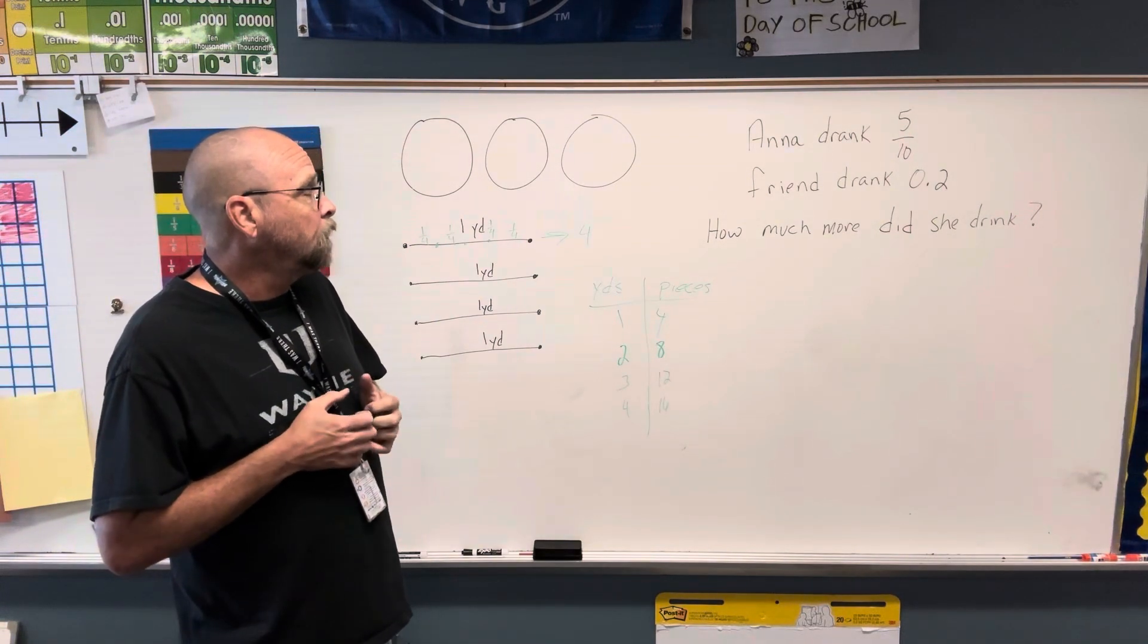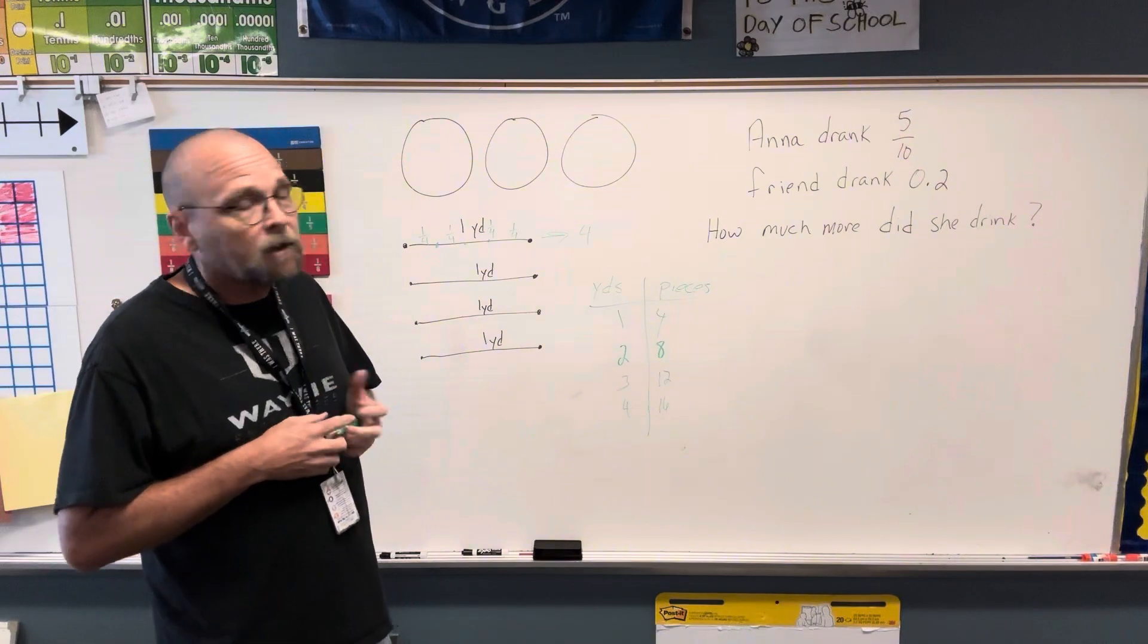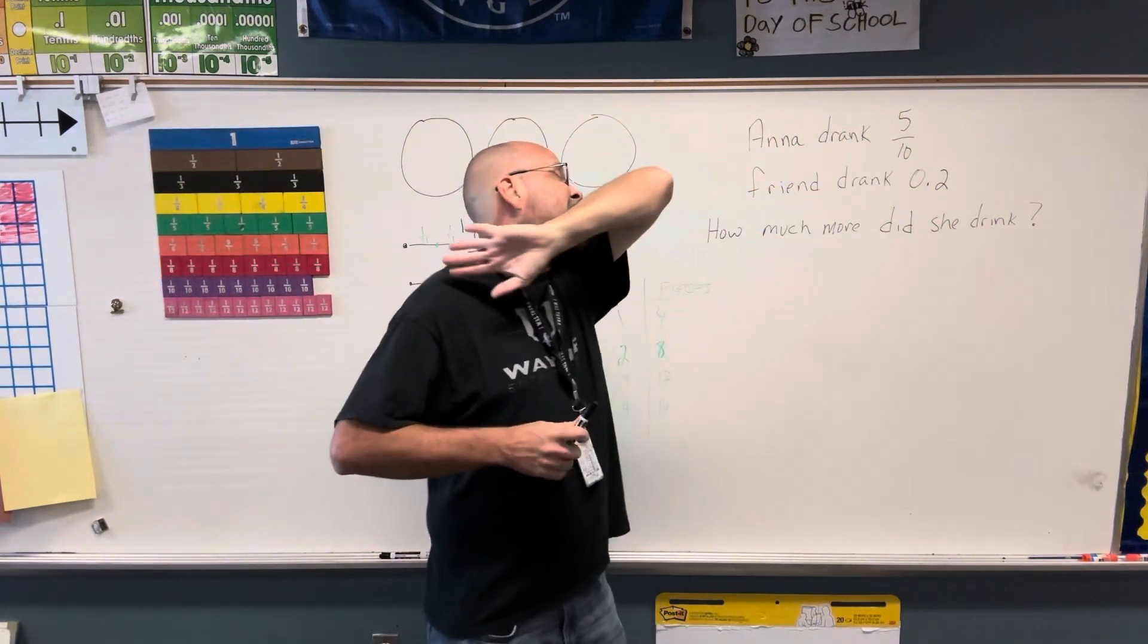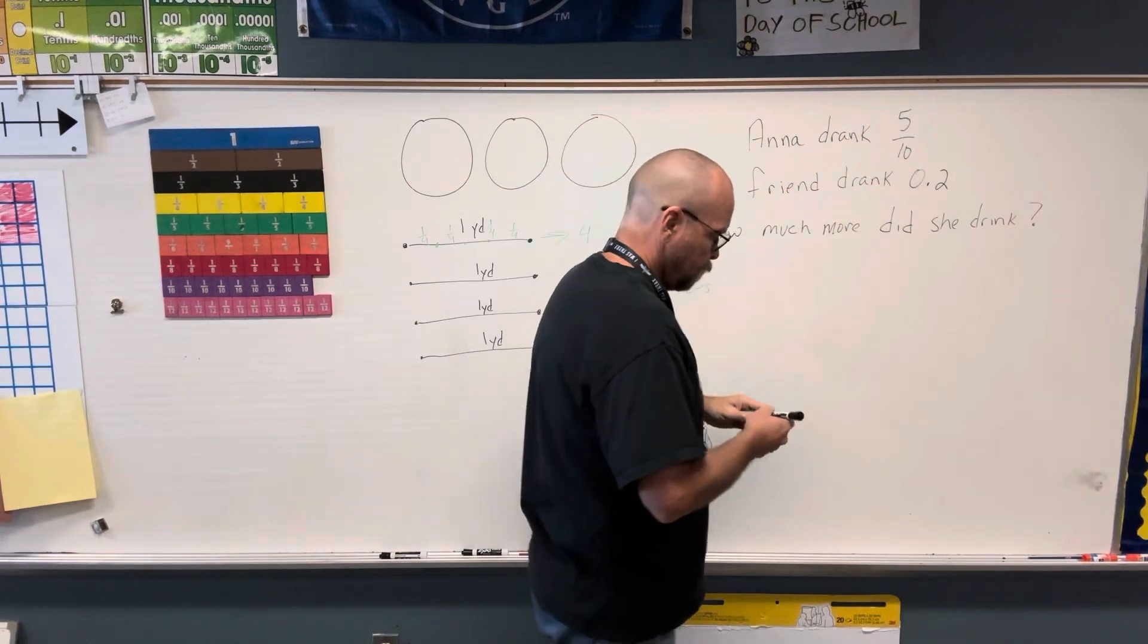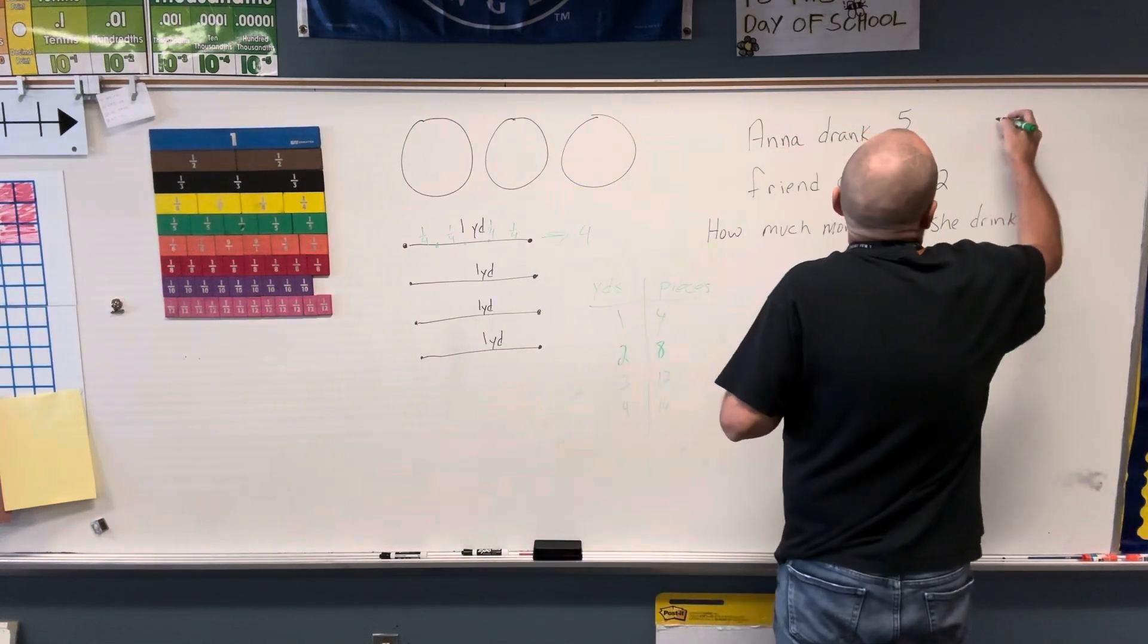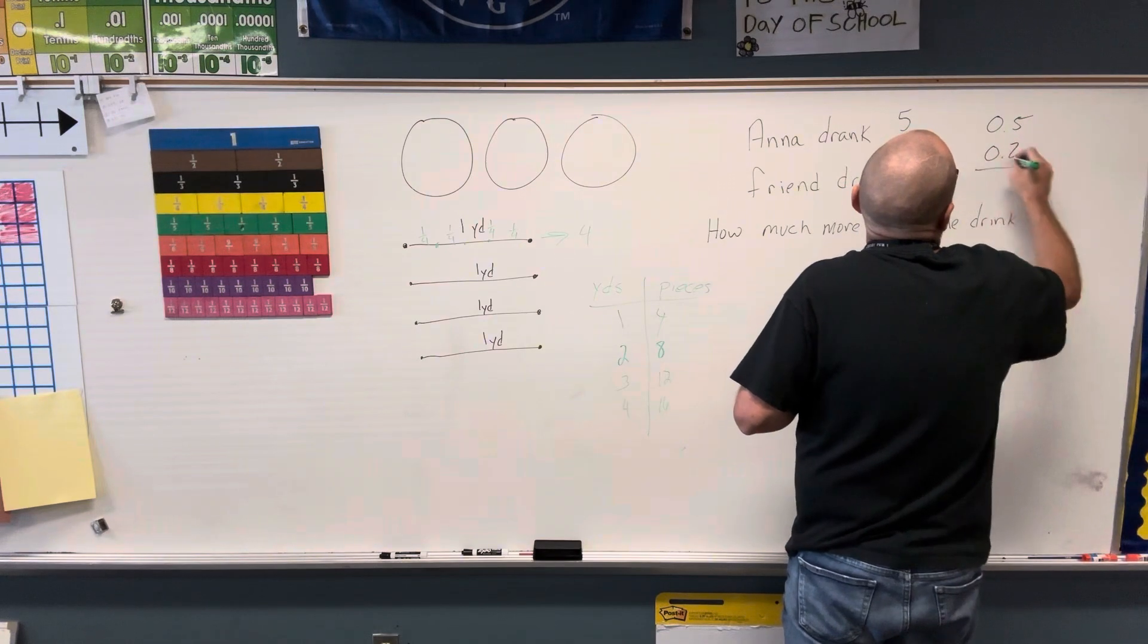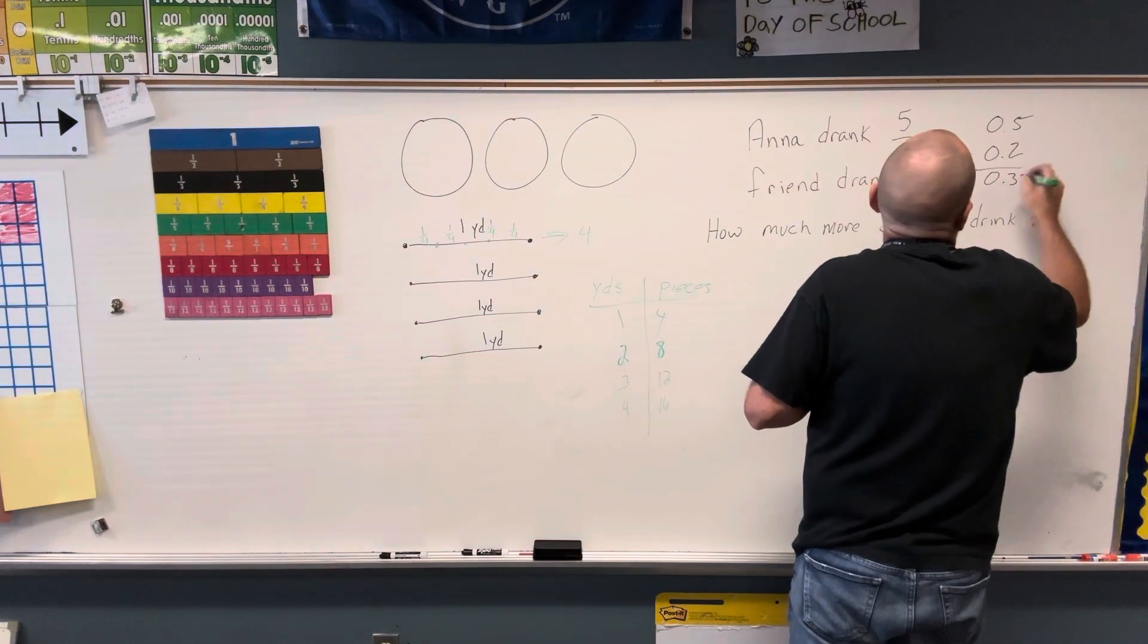Anna drank five-tenths. Fran drank two-tenths. How much more did she drink? One is as a decimal, one is as a fraction. We can make them both the same. So I can make this as a decimal, subtract and get three-tenths.